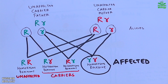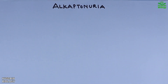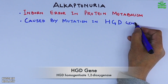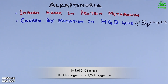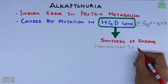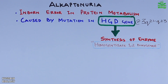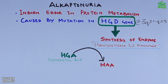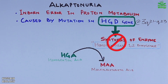Moving towards alkaptonuria, which is also an inborn error in protein metabolism caused by a mutation in the HGD gene located at 3q21-23. This HGD gene drives the synthesis of the enzyme homogentisate 1,2-dioxygenase, which is crucial for protein metabolism. This enzyme acts on HGA (homogentisic acid) and converts it into MAA (maleylacetoacetic acid). When the HGD gene is mutated, this enzyme is absent and homogentisic acid is not converted.